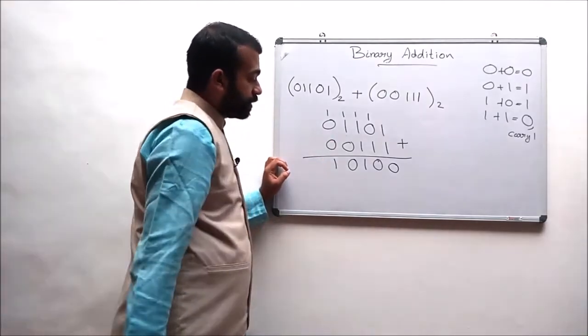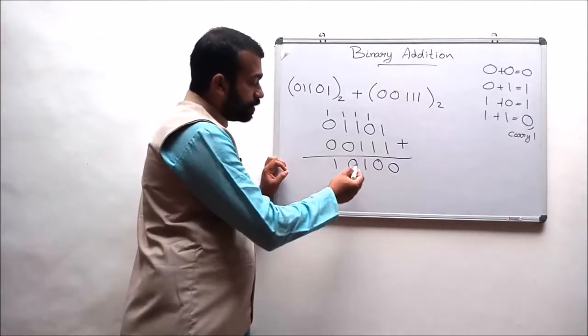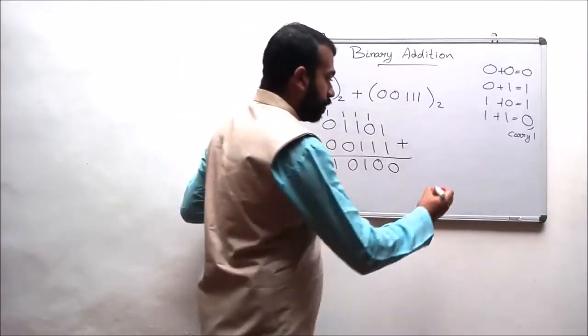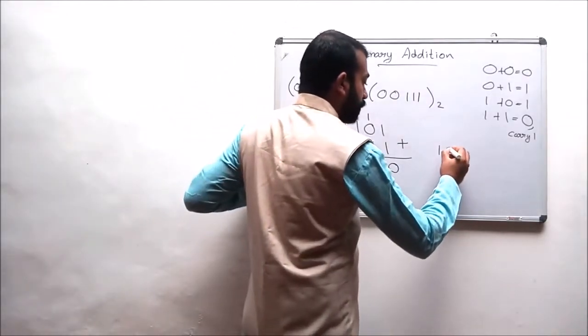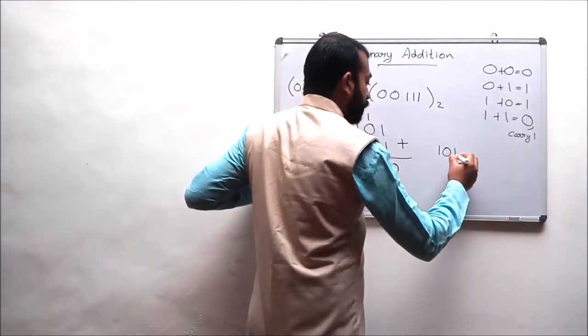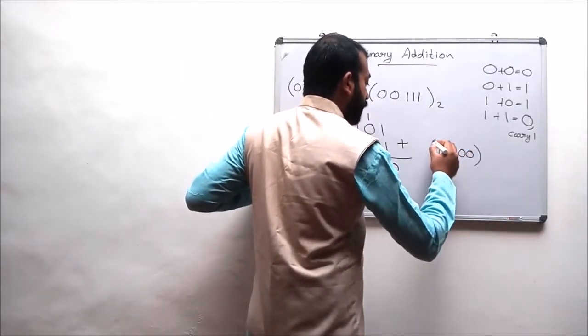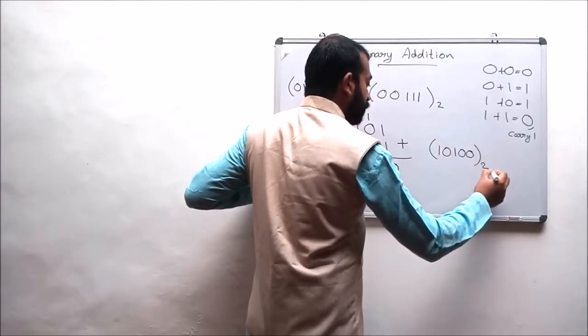So the final result is 1 0 1 0 0 1 0 1 0 0 to the base 2.